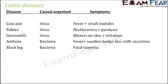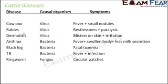Black leg — the causal organism is bacteria and the symptom is fatal toxemia, which can result in death of the animal. Tuberculosis (TB) is also caused by bacteria; the animal has fever as well as infection.